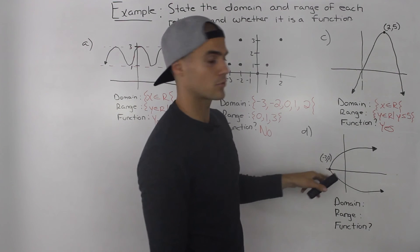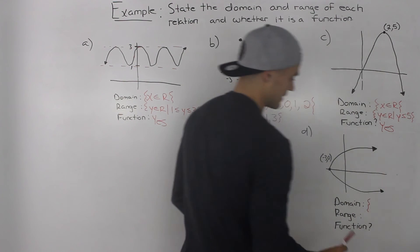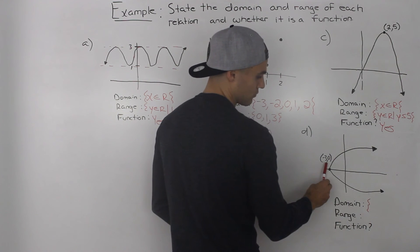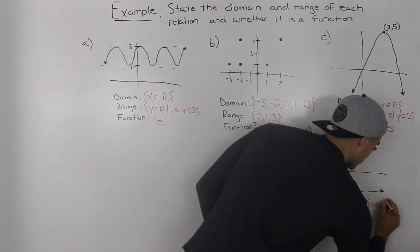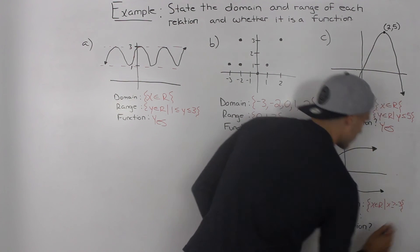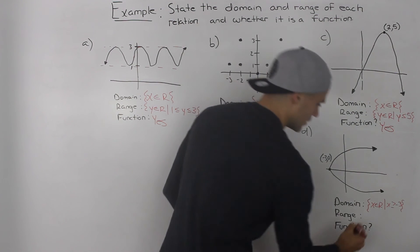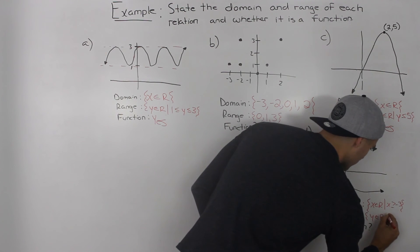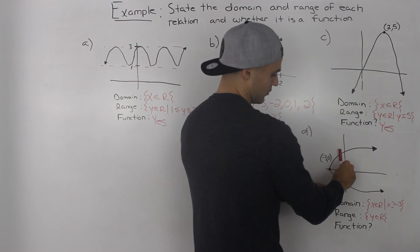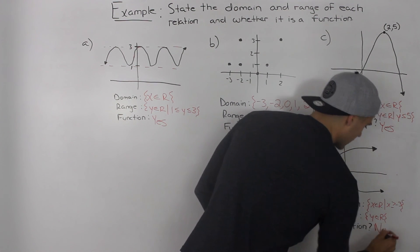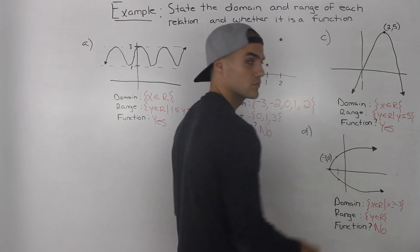Moving to part d — this is not a regular parabola, it's a sideways parabola, so the domain and range will be a little different. The x values have to be greater than or equal to negative 3, which is the x value of the vertex. So the domain is x is an element of real numbers with x greater than or equal to negative 3. The y values have no restrictions — they go on forever — so the range is y is an element of real numbers. Running a vertical line through it: it's not a function, because multiple points on the relation touch the vertical line — multiple y values for a single x value.